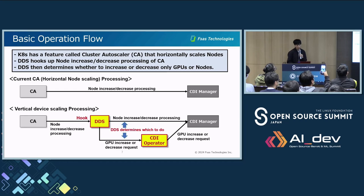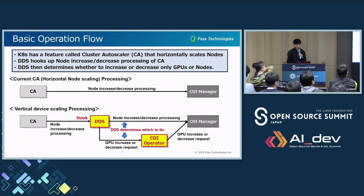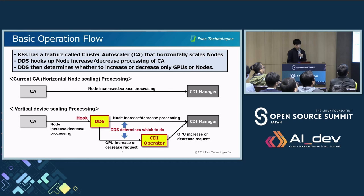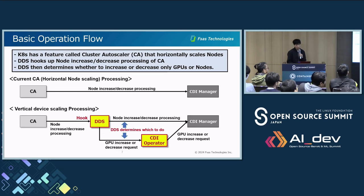Next, I explain basic operation flow. It's important to note that DDS leverages a feature called cluster autoscaler. Cluster autoscaler is a Kubernetes feature that allows nodes to scale horizontally depending on load — this feature is called CA. DDS hooks into node increase or decrease processing of CA, and DDS determines whether to increase or decrease only GPUs or nodes. This means that if CA tries to add a node, but DDS determines that adding the GPU is optimal, only GPU will be added.